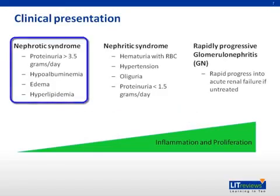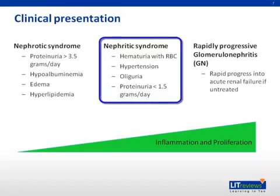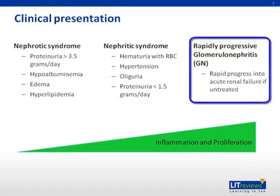The hallmark of nephrotic syndrome is heavy proteinuria, which is usually caused by podocyte injury. Nephritic syndrome is characterized by hematuria, some proteinuria, and subsequently renal failure. This is due to endothelial injury and increasing inflammation, leading to proliferation with rapidly progressive glomerulonephritis.